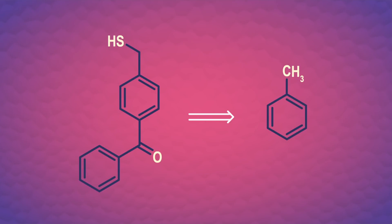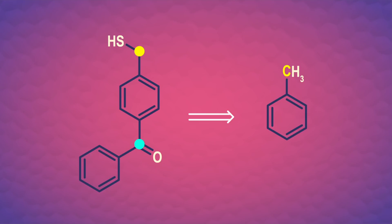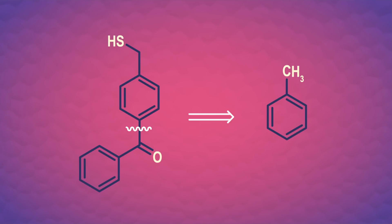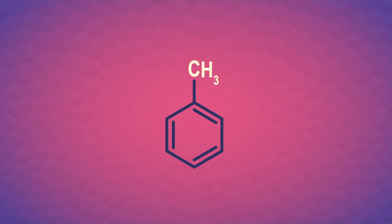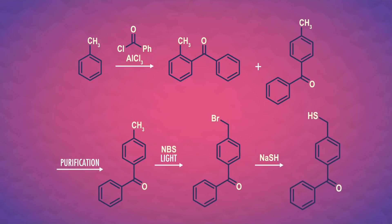Let's do one more retrosynthesis problem. Our starting material toluene has a CH3 group on the ring — that's an ortho-para-director — and we don't have an easy way to remove this methyl group, so it needs to be in our product too. We need to add an acyl group with another benzene ring attached via EAS, and we also know benzylic bromination and that halides are good leaving groups in SN2 reactions, with sulfur being a good nucleophile. For our forward synthesis, we capitalize on the ortho-para-directing effect of the methyl group and acylate first. With a purified para product, we do a benzylic bromination, then an SN2 reaction on our benzylic substrate with a sulfur nucleophile.